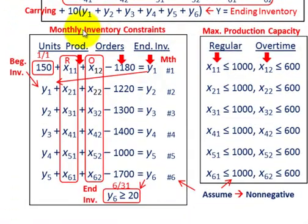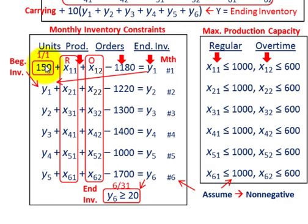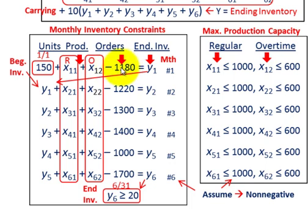Now we have to come up with our constraints — starting with some monthly inventory constraints. For month one we have 150 units in beginning inventory plus whatever we're producing in regular, x1,1, plus overtime, x1,2. Then we subtract from that the orders we have for the period — in this case for that first month it's 1,180. You take 150 plus whatever units for regular and overtime, subtract 1,180 the number of orders for the month, and that equals your ending inventory. In your linear program it has to be an equality — it can't be an inequality greater than or less than.